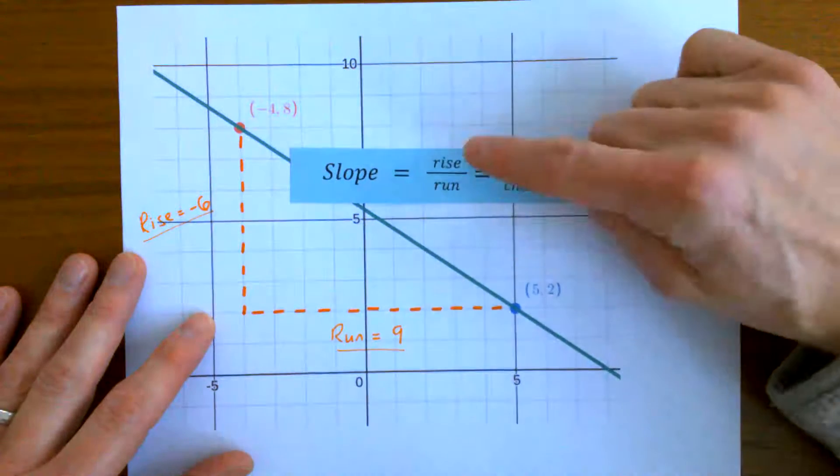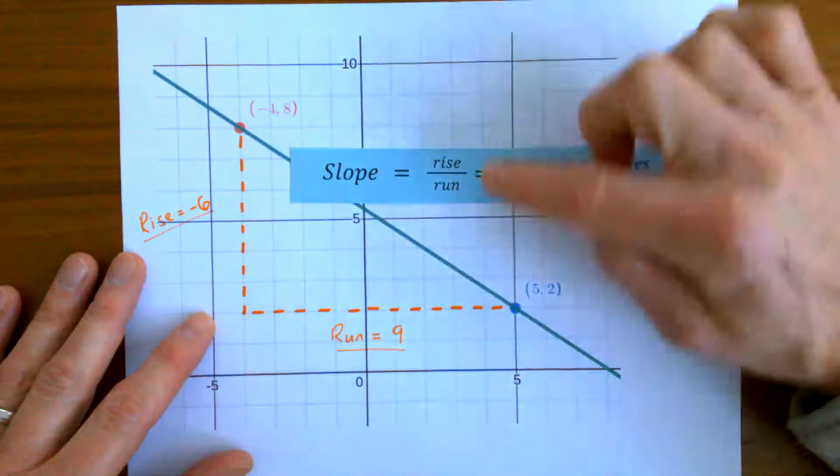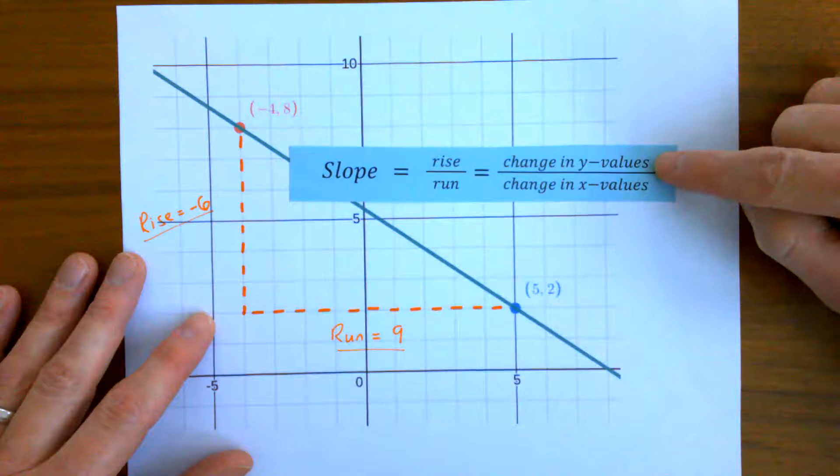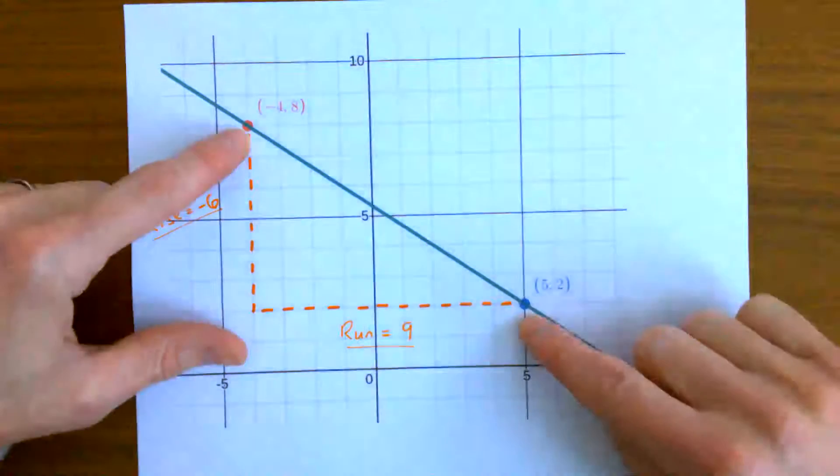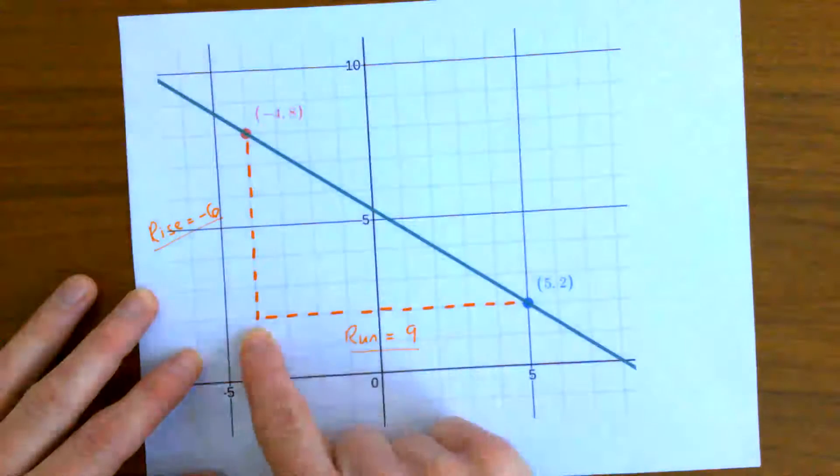And I know that slope is rise over run, rise divided by run, or the change in the y values divided by the change in the x values. So between these two points I can see my rise and my run.